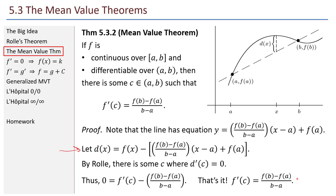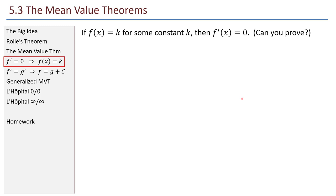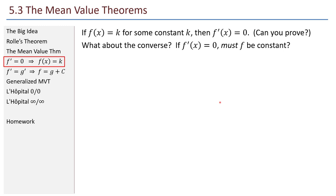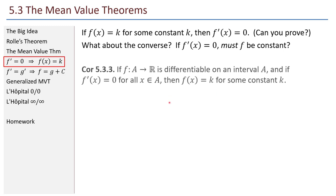Some immediate consequences. If a function is constant — if f(x) equals k for some constant k — then the derivative is 0. But what about the converse? If the derivative is 0, must f actually be a constant function? Conceivably there's some weird kind of function whose derivative is 0 but that function isn't a constant. It turns out that can't be the case — the converse is true.